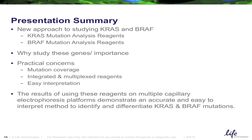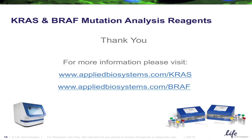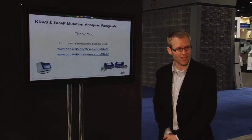We've taken a look at our new KRAS and BRAF mutation analysis reagents for targeted fragment analysis. We've tested the KRAS mutation analysis reagents against metastatic colorectal cancer samples and run them on various capillary electrophoresis platforms. What we've determined is that this is an accurate and easy to interpret method to identify and differentiate KRAS and BRAF mutations. For more information, you can visit appliedbiosystems.com/KRAS or appliedbiosystems.com/BRAF. Thank you very much.